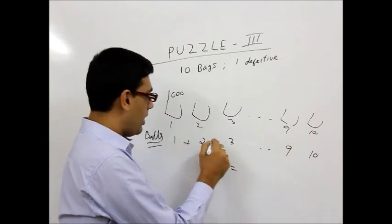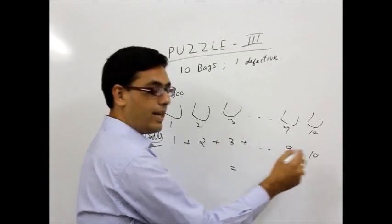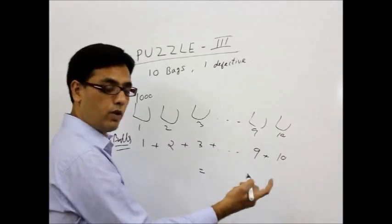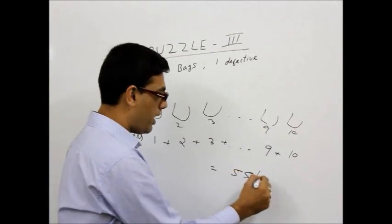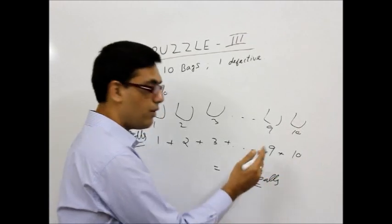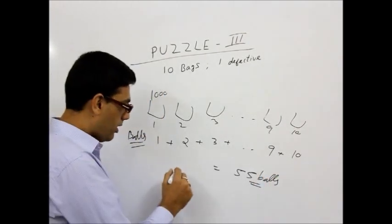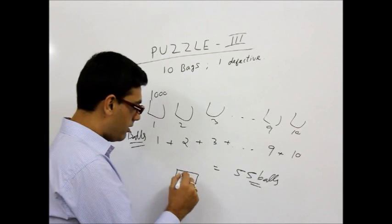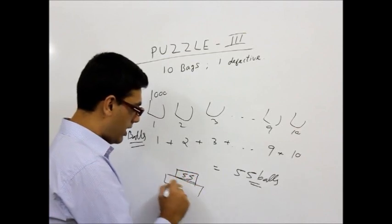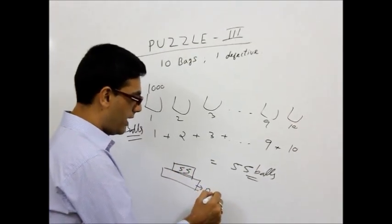So in total, we have taken 1 plus 2 plus 3 plus till 10, which is n into n plus 1 by 2. If you solve, 55 balls we have taken out. We put these 55 balls on the pan and we look at the display reading.